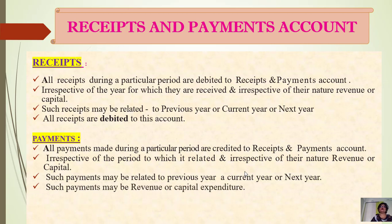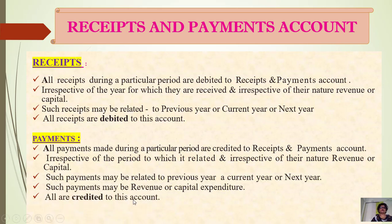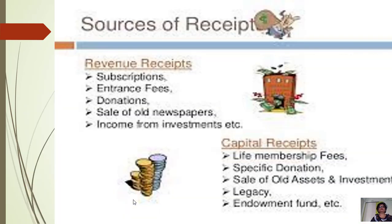Such payments may be revenue or capital — all are credited to this account. All sources of receipt: revenue receipts include subscription, entrance fees, donations, sale of old newspapers, income from investment. Capital receipts include life membership fees, specific donation, sale of old assets and investments, legacy, and endowment fund. These are examples of sources of receipts.